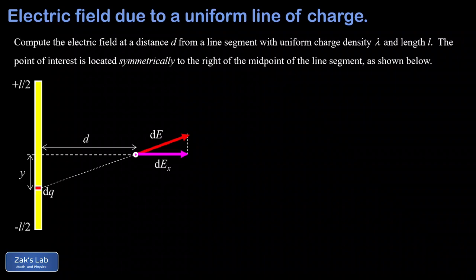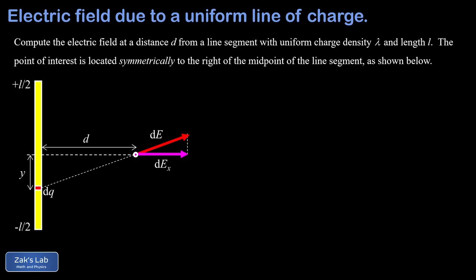In this video, we're going to compute the electric field around a finite rod with uniform charge density, where the observation point is located on the perpendicular bisector of the line charge. This problem naturally leads to a challenging integral that can be solved with trigonometric substitution. Most textbooks and videos omit the calculation of this integral and simply rely on an integration table, but I think it's worth showing how to do it. After getting our result, we're going to look at a couple of limiting cases.